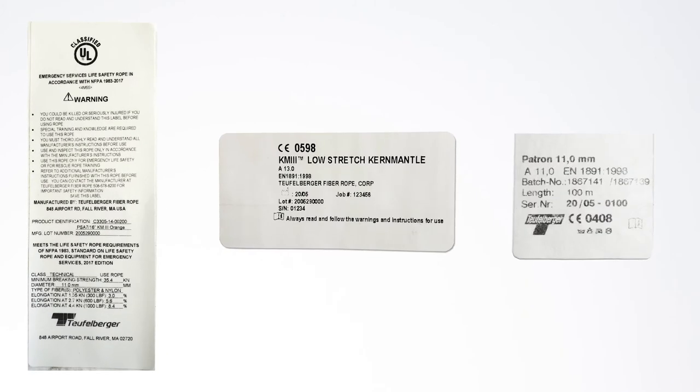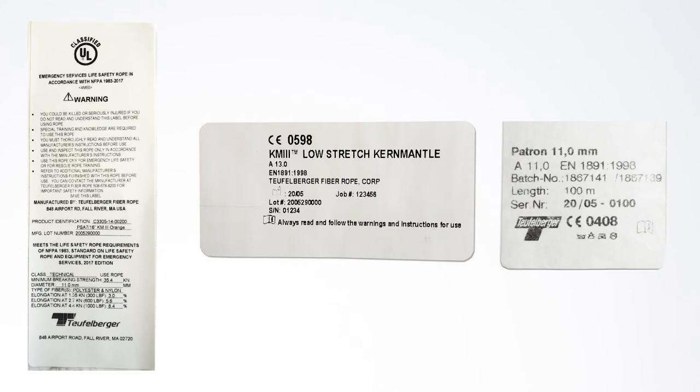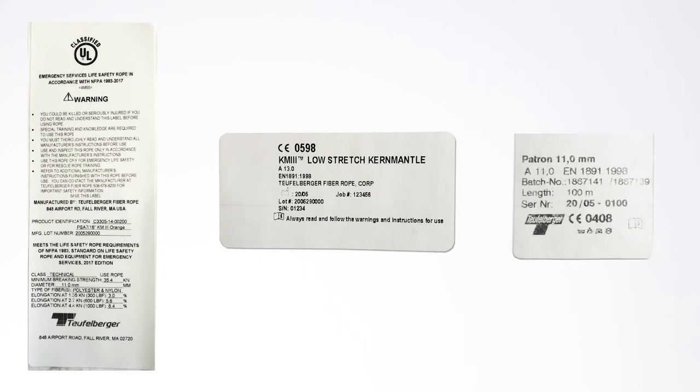So now that you know what you're looking for, let's look at the labels themselves in some detail. Most life safety ropes will either have an NFPA label, a CE label, or both. Let's look at each one of those.